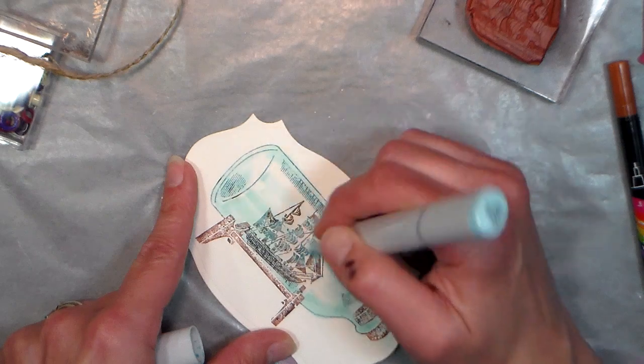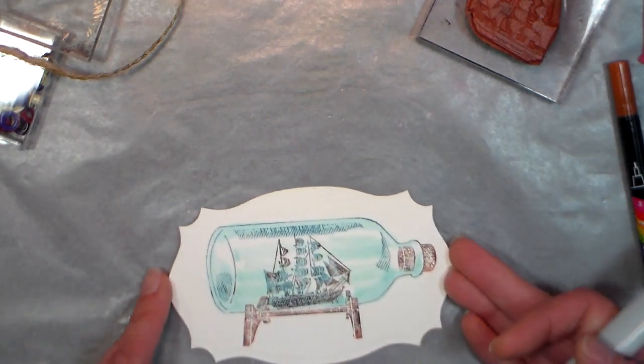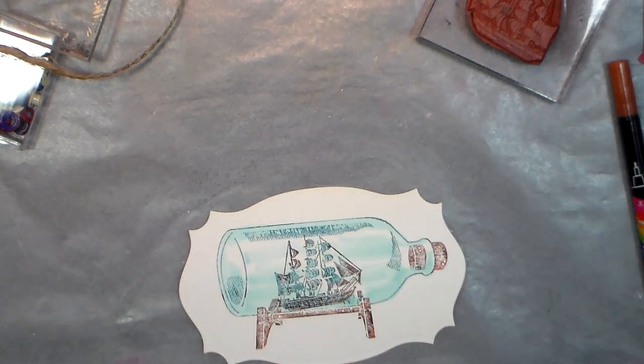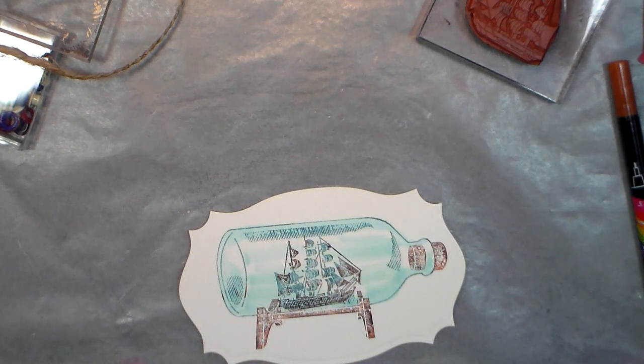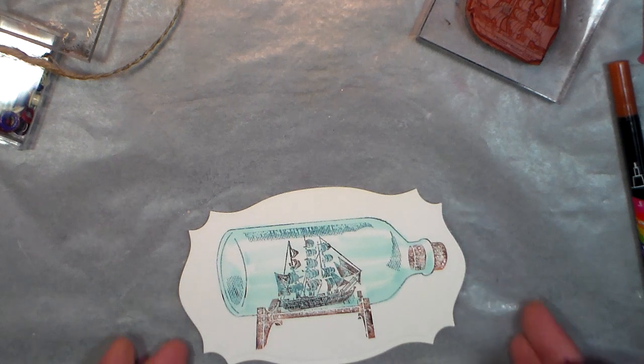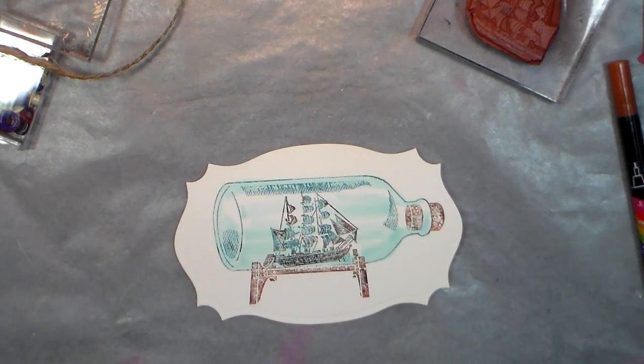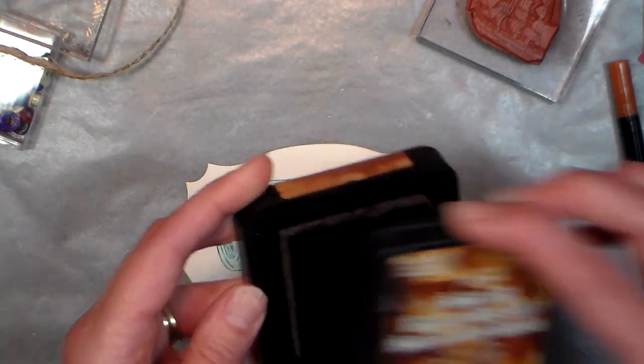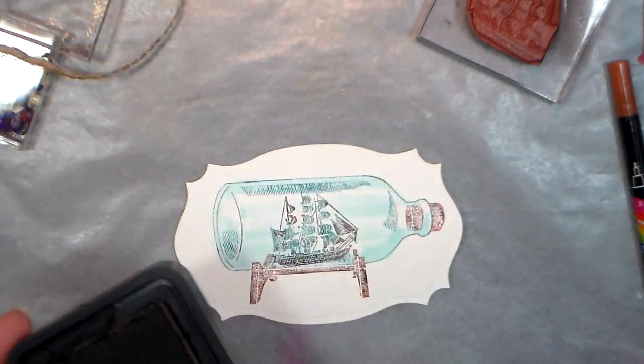I just want to have some streaky blue to make it look like a real bottle, and I want to add some inking around the edges. But I don't want anything too harsh, so I'm going to use color dusters. This one's pretty close, and I'm going to use some brown distress ink, this is vintage photo.